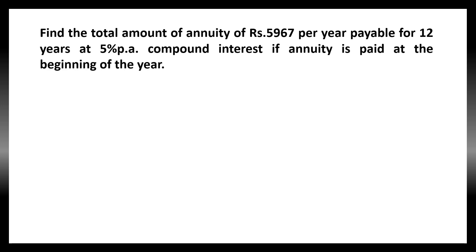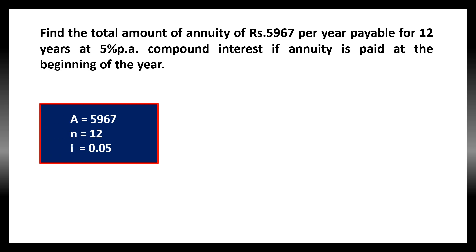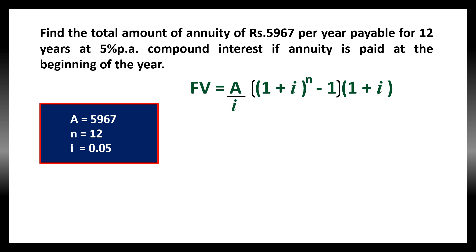Now, let us take another problem. Find the total amount of an annuity of rupees 5,967 per year payable for 12 years at 5% per annum compound interest, if the annuity is paid at the beginning of the year. Here, the formula to be used is different because the annuity is paid at the beginning of the year. A is 5,967, N is 12, and I is 5%, that is 0.05. The beginning-of-year formula is applied.